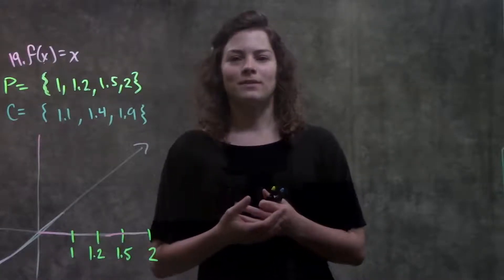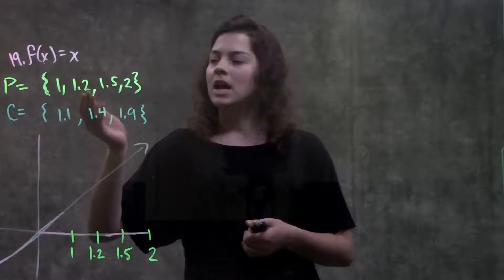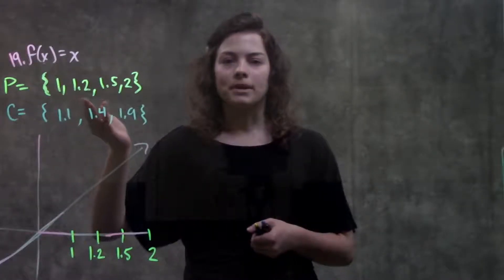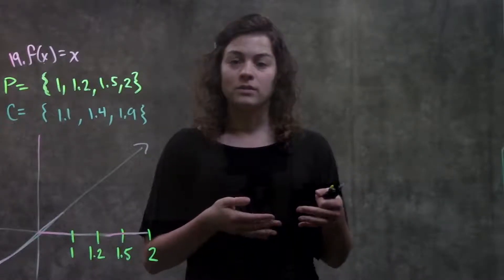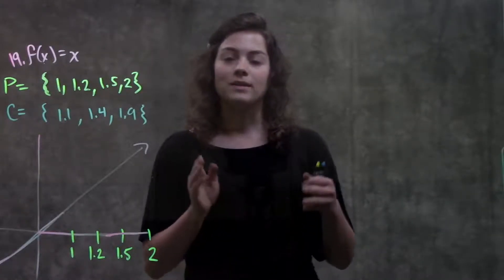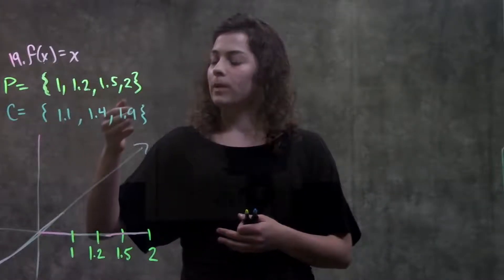Okay, so this problem looks a little bit confusing, but actually it's pretty simple. They're giving us this function, f of x. They're giving us partitions. Partitions, that's just the intervals that they're interested in. In other words, relating it to our Riemann sums, that's the width of each rectangle. So P stands for partition.